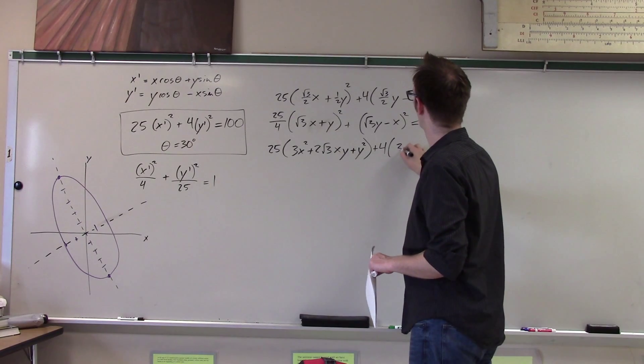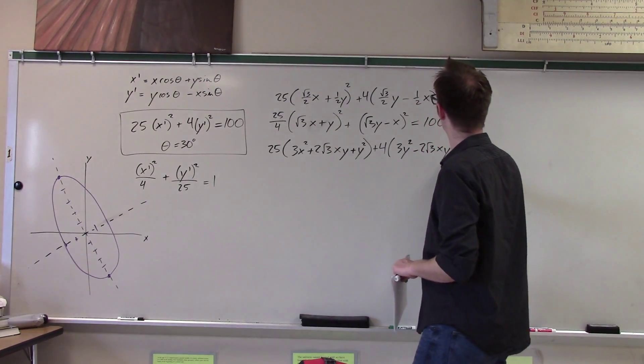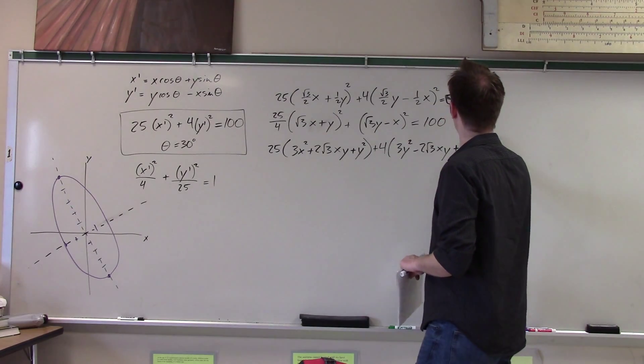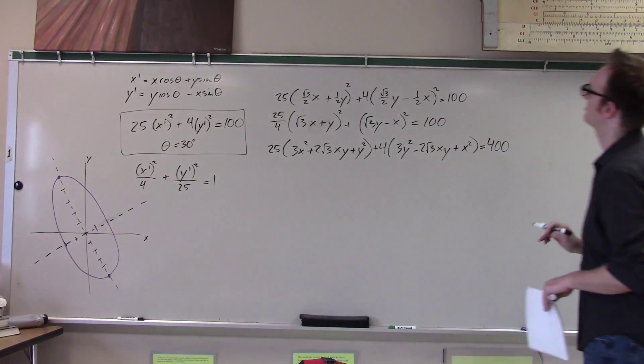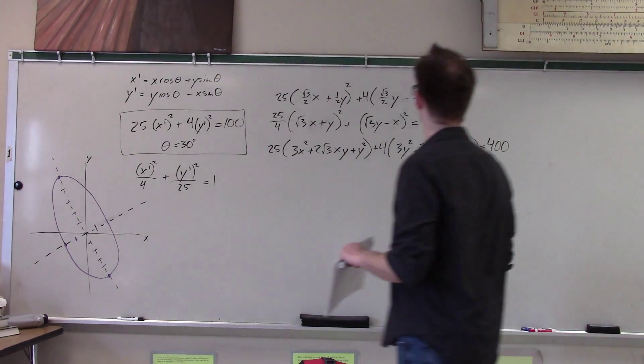And let's expand everything. So I get 25 times 3x squared plus 2 root 3xy plus y squared plus 4 times 3y squared minus 2 root 3xy plus x squared equals 400. That's because I multiplied by 4 through the whole thing, and I also just am expanding these binomials.